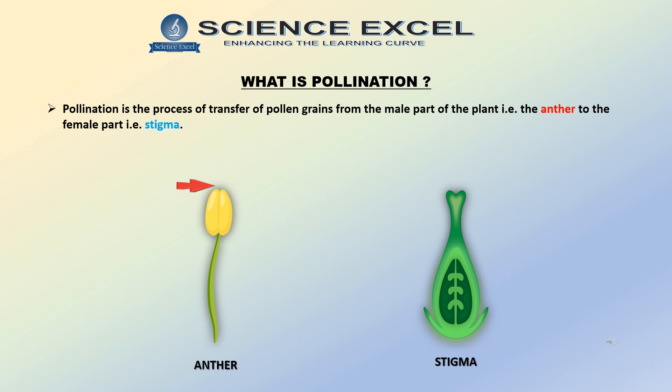You must be thinking, how are these pollens carried from one flower to another? This lands us on the term pollination. Pollination is the process of transfer of pollen grains from the male part of the plant, the anther, to the female part of the plant, that is the stigma.